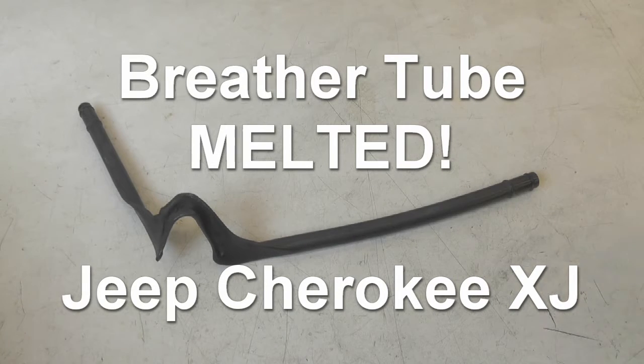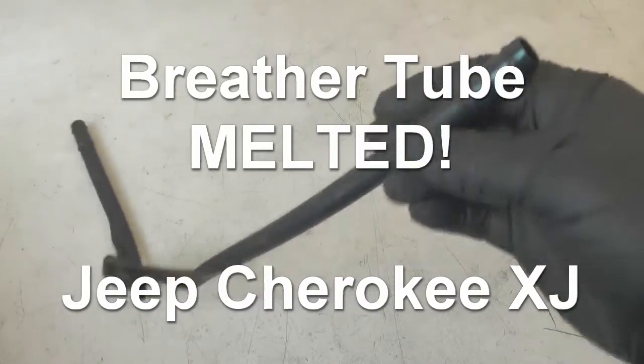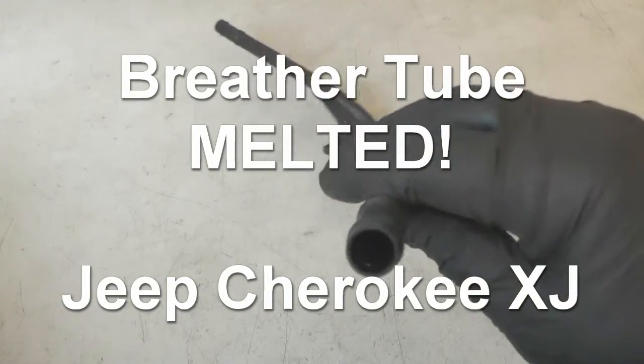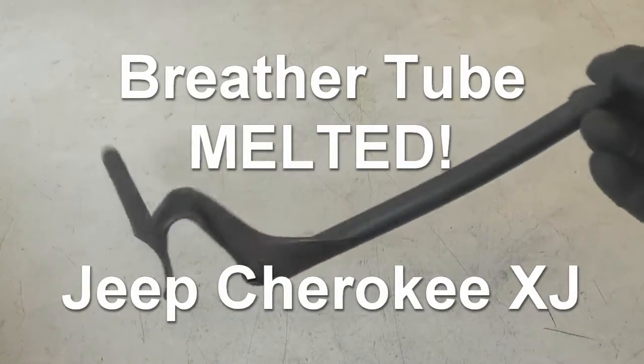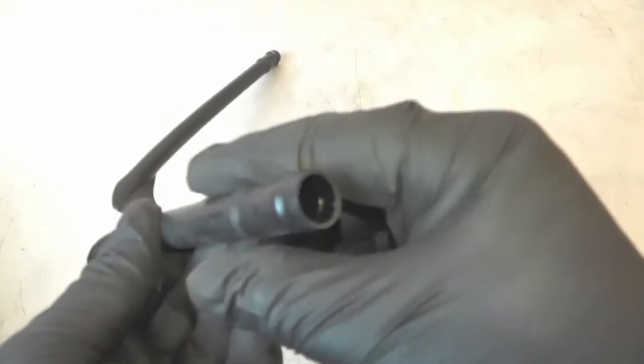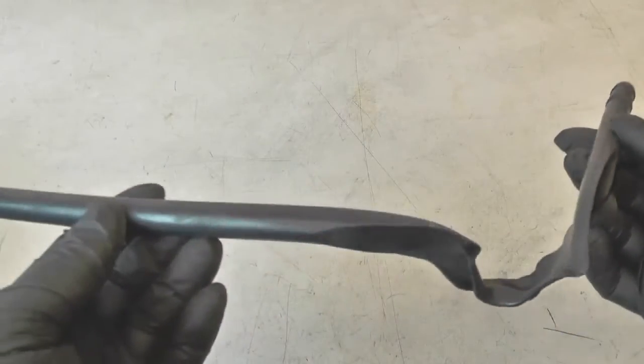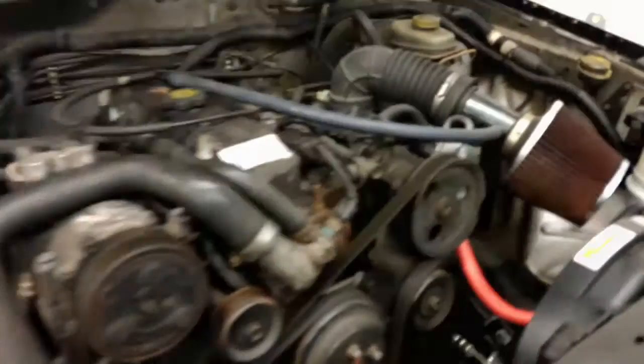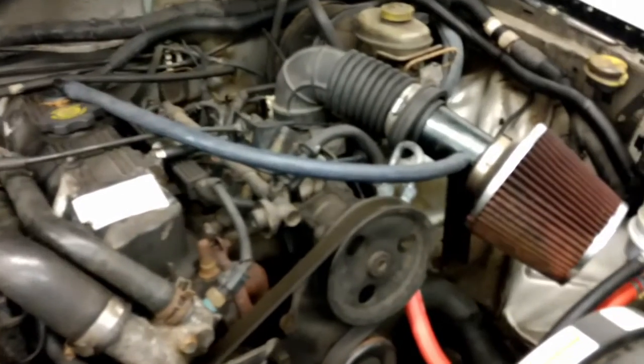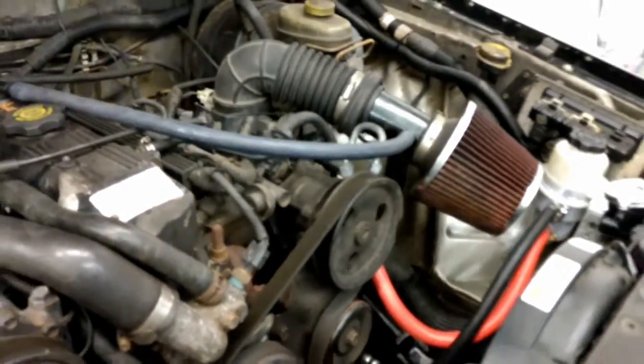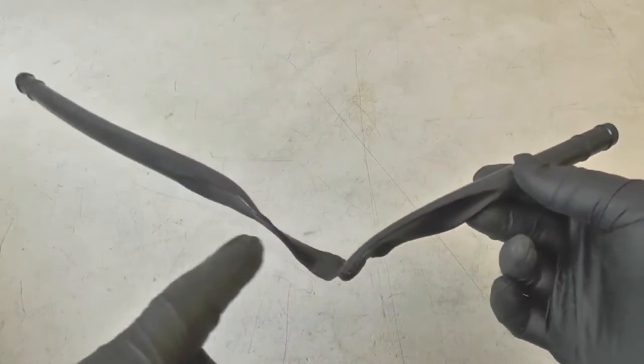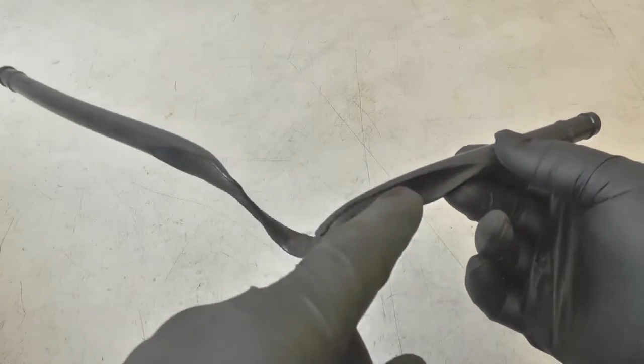Hi everybody, this is a breather tube, at least it was, from a 2000 Jeep Cherokee XJ. This Jeep was involved in an engine fire which melted this breather tube. This is the tube that goes from the top of the valve cover over to the air cleaner assembly, and this section right here was hanging